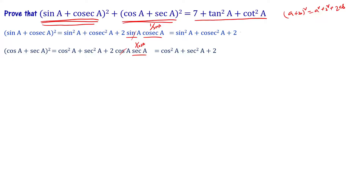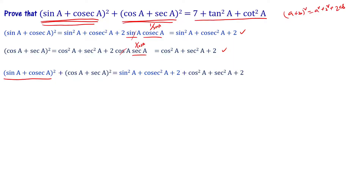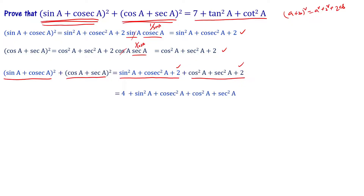Now substitute these two simplified expressions into the LHS: (sin²a + cosec²a + 2) + (cos²a + sec²a + 2). Adding the constants gives 4 + sin²a + cos²a + cosec²a + sec²a. We know the trigonometric identity sin²a + cos²a = 1.